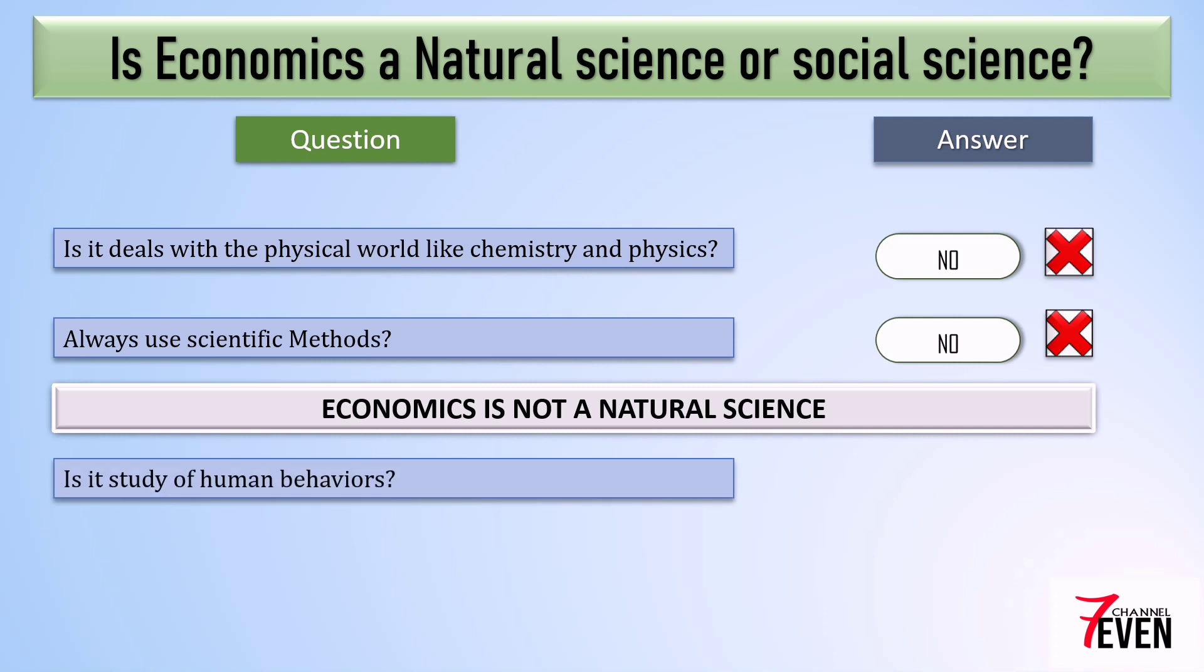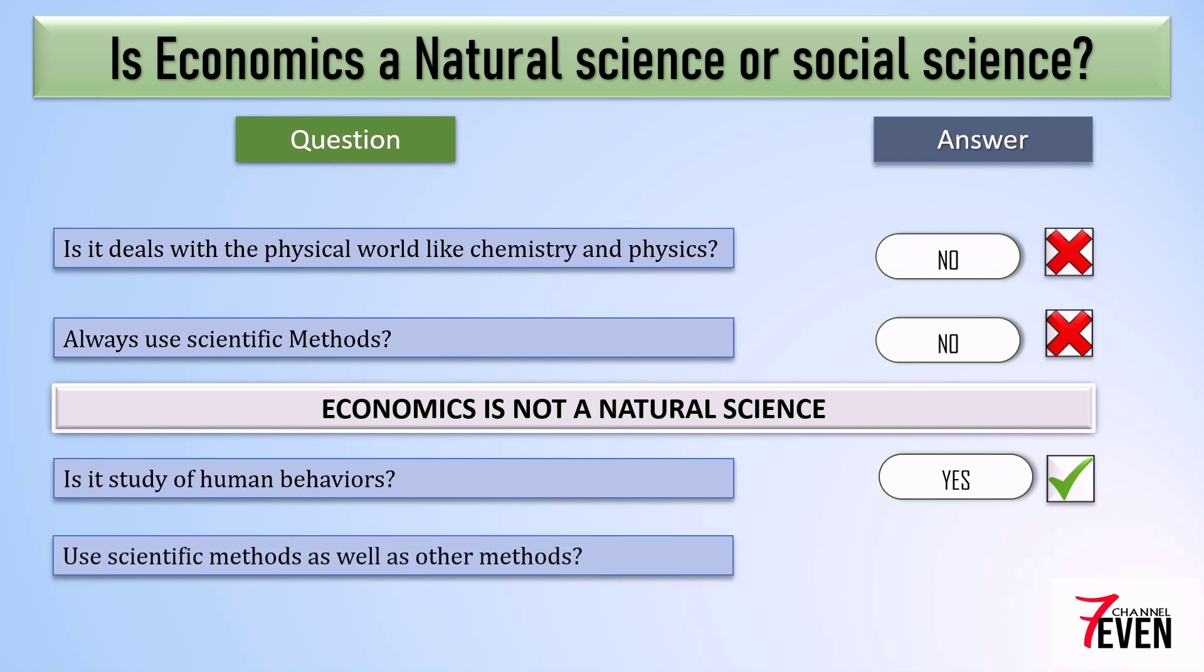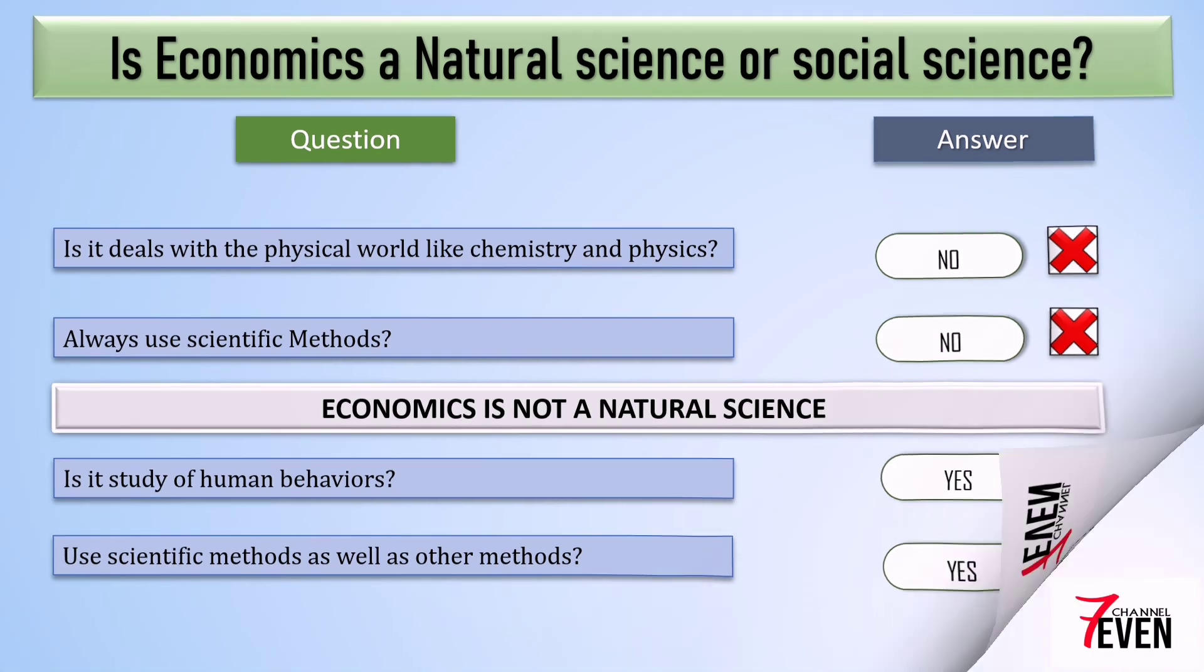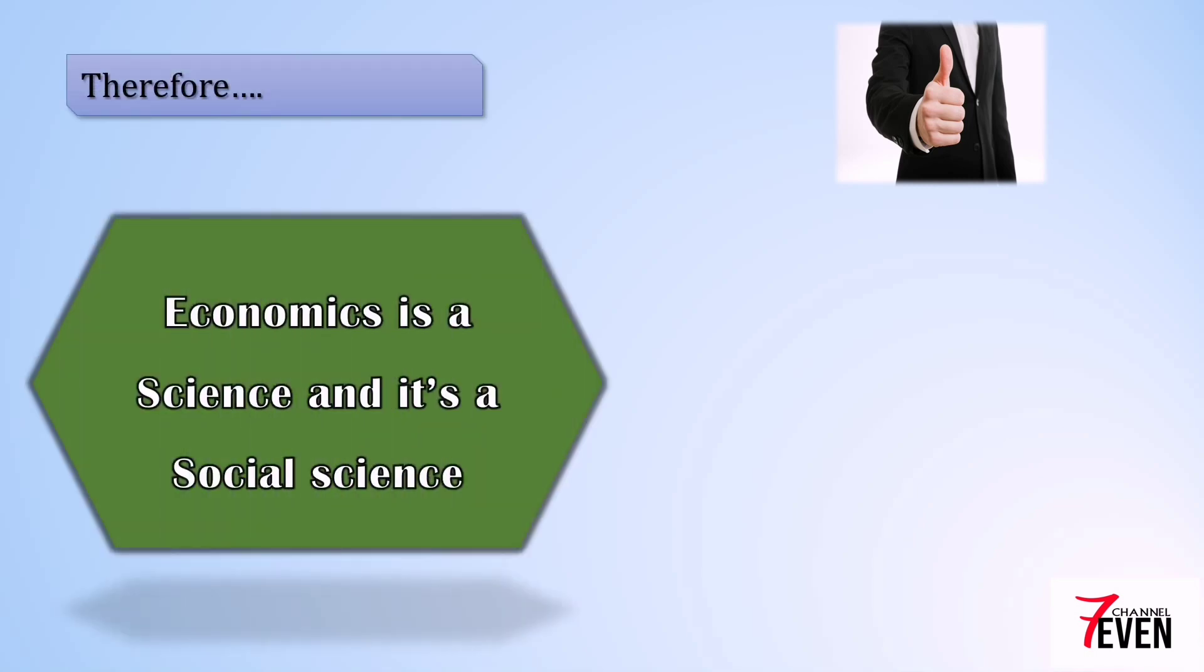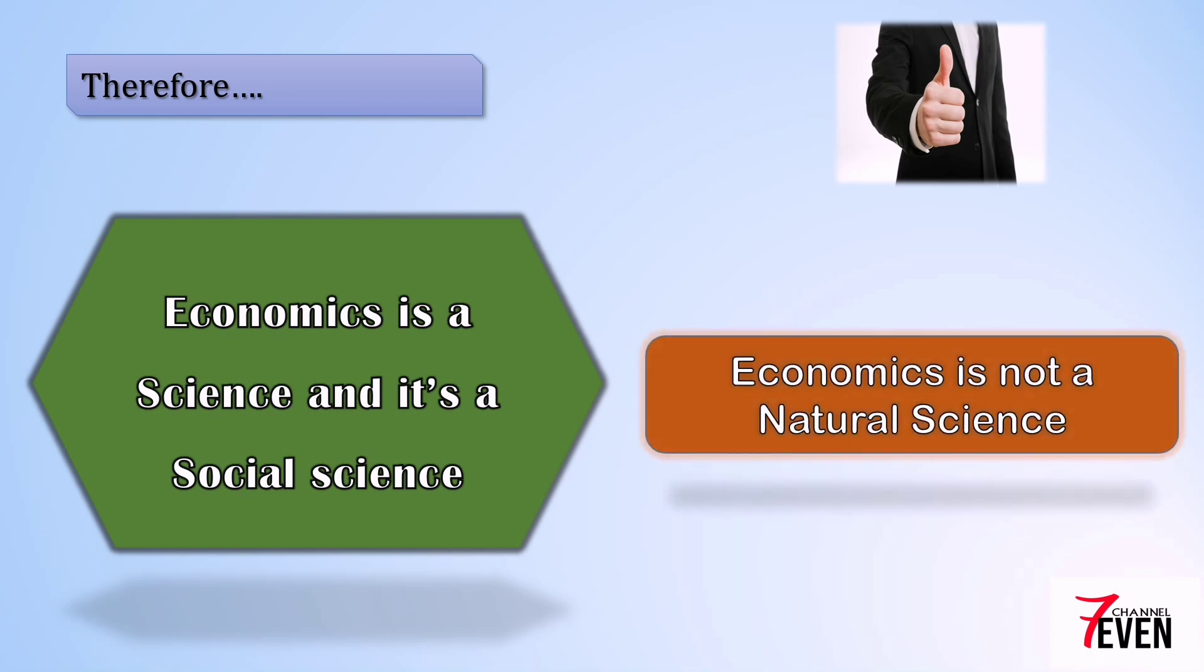Does economics study human behaviors? Yes, it does. Does economics use scientific methods as well as other methods? Yes, it does. If so, no doubt - economics is a social science. So we have to accept the reality. Economics is a science, and it is a social science. Economics is not a natural science.